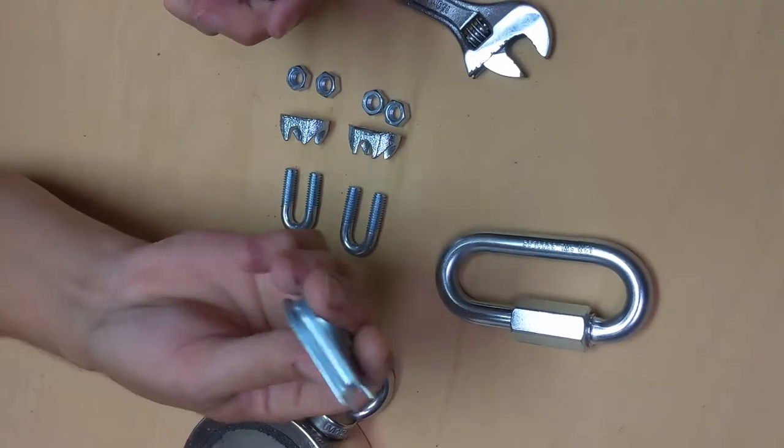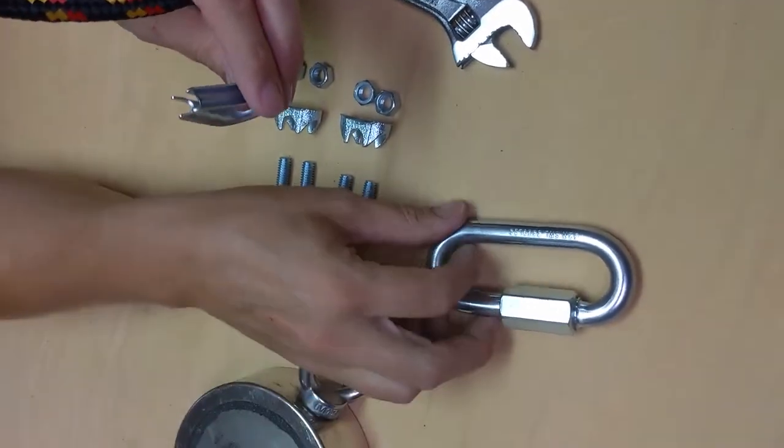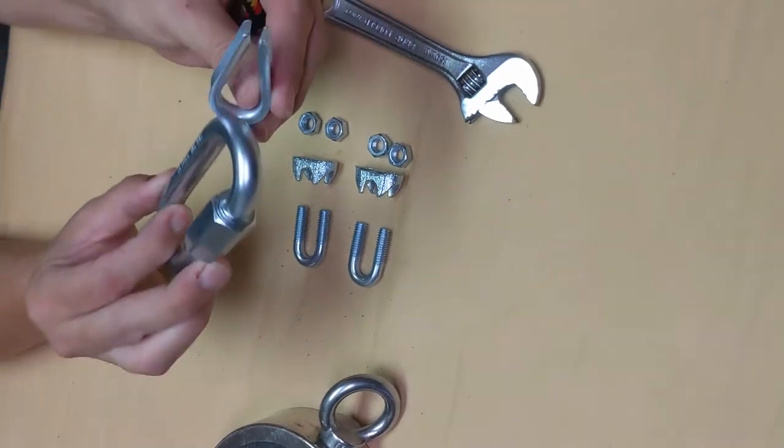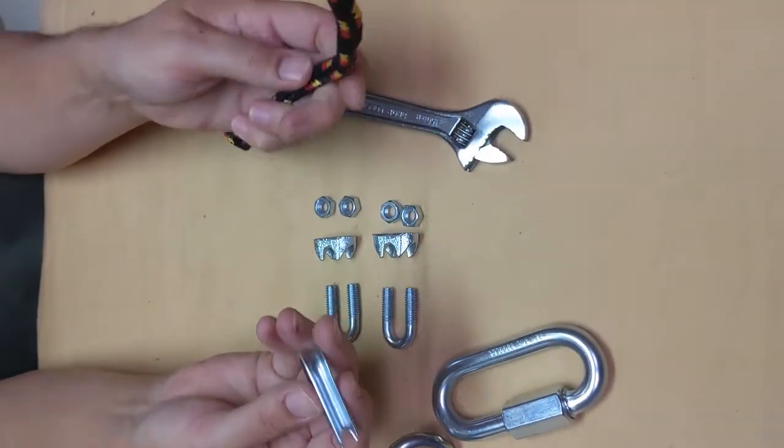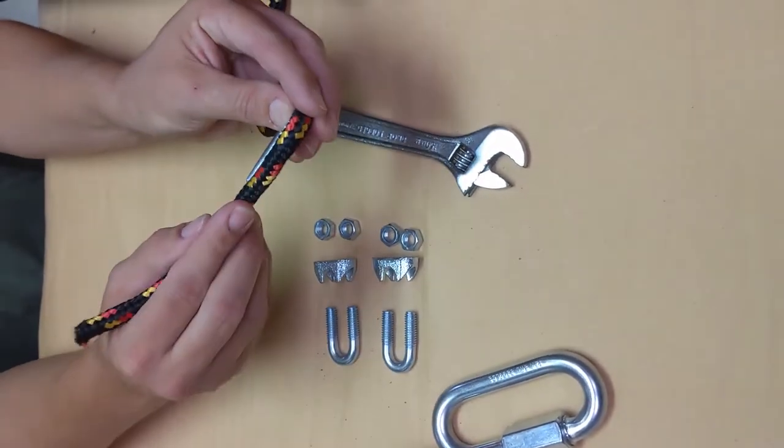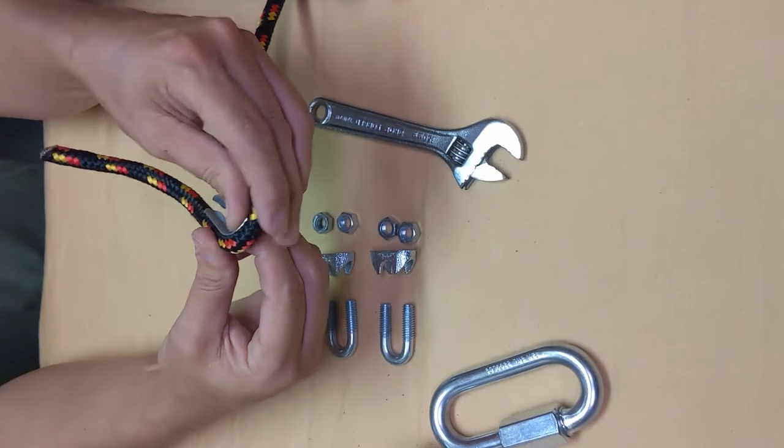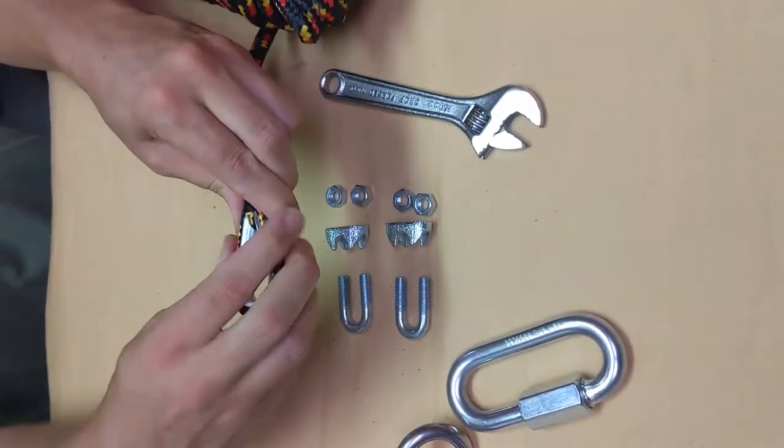You're going to take the rope, and you're going to take this piece. This is going to keep your clamp from wearing your rope out too fast. You're going to take this piece, and you're going to take enough rope to go all the way around it in both directions, very tight.